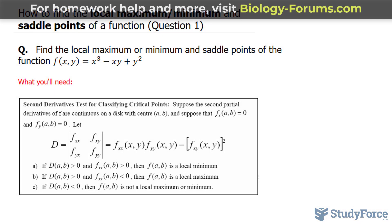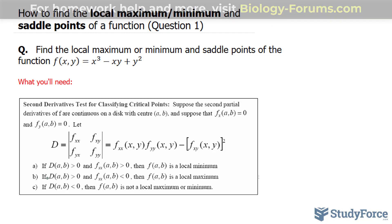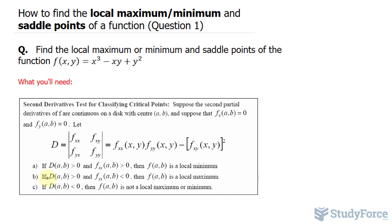To be successful here, you'll need to know the second derivative test for classifying critical points, which tells us that if the second partial derivative of the function is continuous and we let D equal this square matrix — referred to as the Hessian matrix — finding the determinant of this will help us determine local minimum, maximum, and potential saddle points. We learned how to find the determinant of a square matrix, and there's a trick to it.